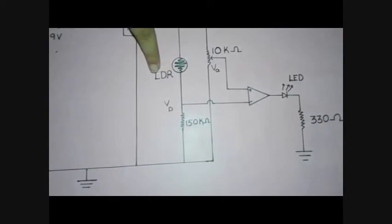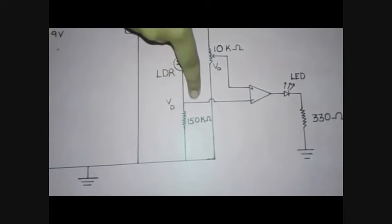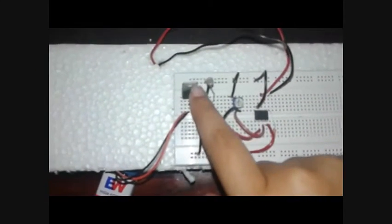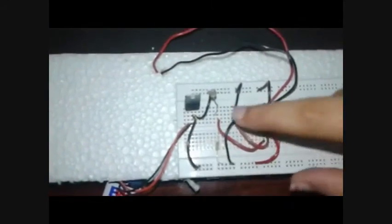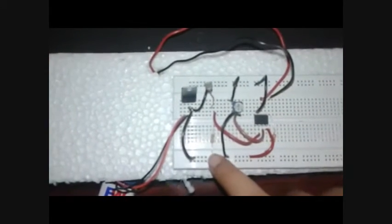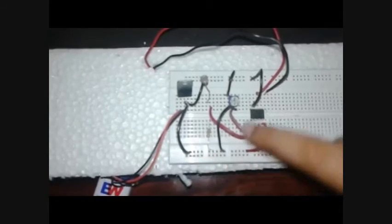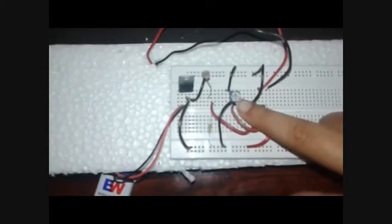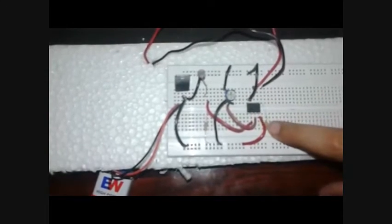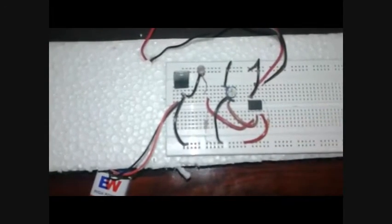When light does not fall on the LDR, resistance increases, VD decreases, and the output LED glows. These are the connections I made on the breadboard. This is IC 7805. This is the light-dependent resistor. This is the 150kΩ resistor. This is the 10kΩ potentiometer. This is IC 741. And this is the 330Ω resistor.